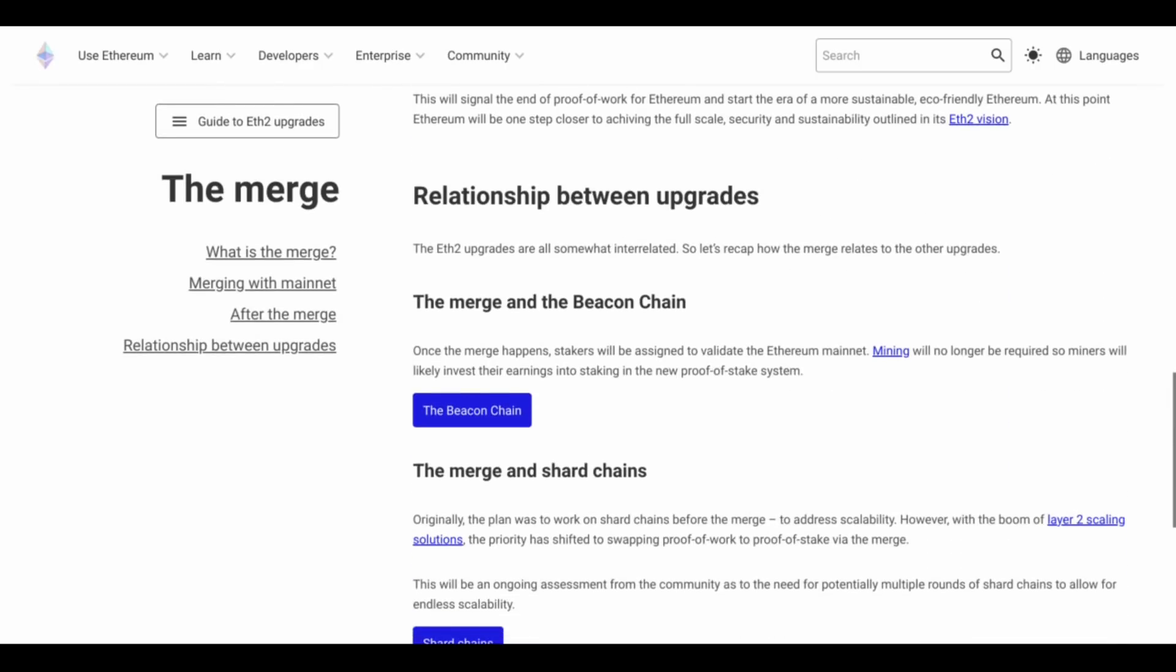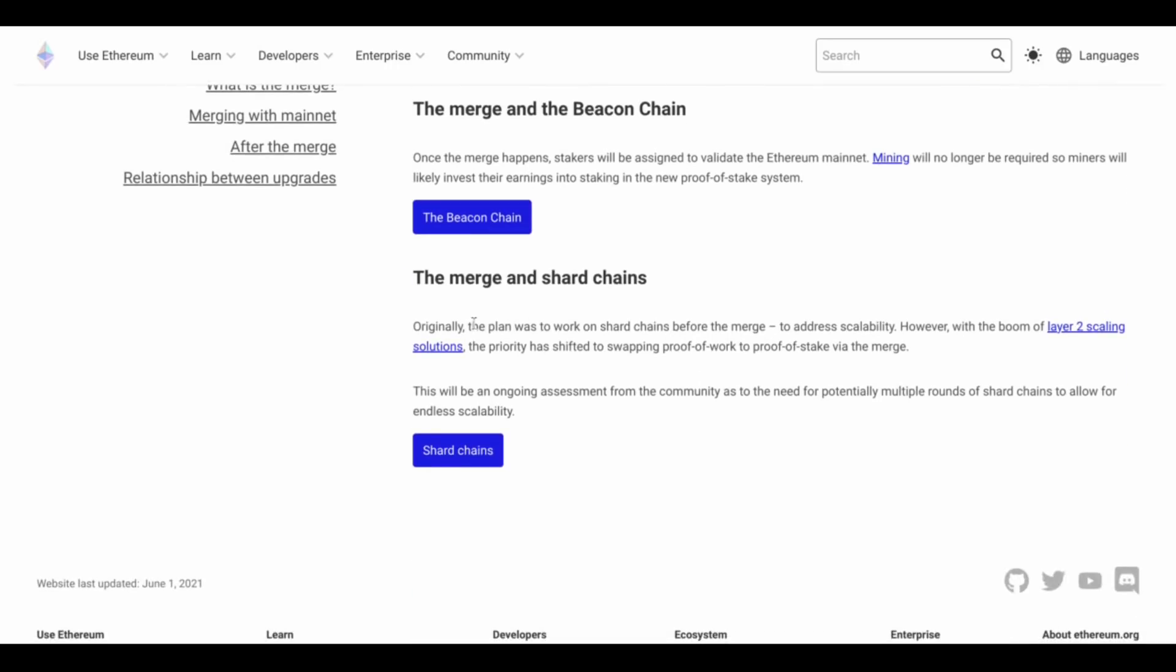So if we go down here, relationship between upgrades, the merge and shard chains, originally the plan was to work on shard chains before the merge to address scalability. However, with the boom of layer two scaling solutions, the priority has shifted to swapping proof of work to proof of stake via the merge. There it is, guys.